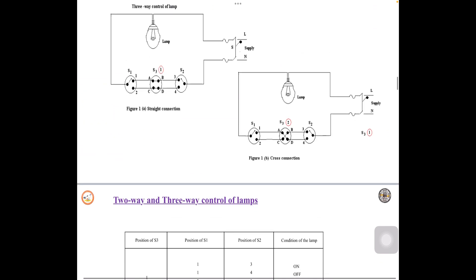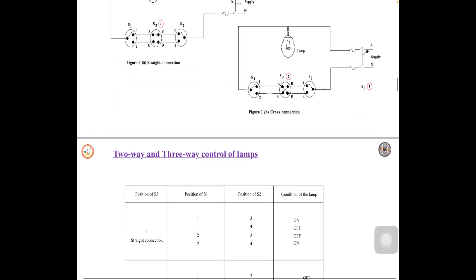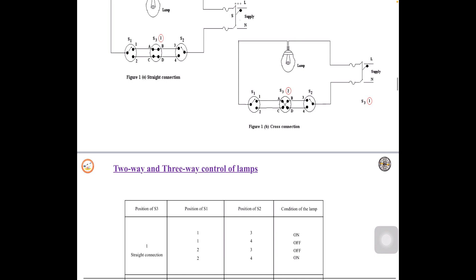Now let us observe the first one, straight connection. Now you can observe here in a straight connection, the position of S1 is at 1, the position of S2 is at 3, and 1 to 3 through A and B there is a continuity. So light will be on.